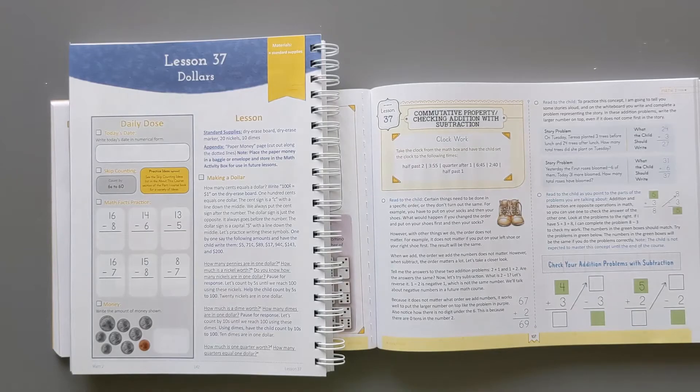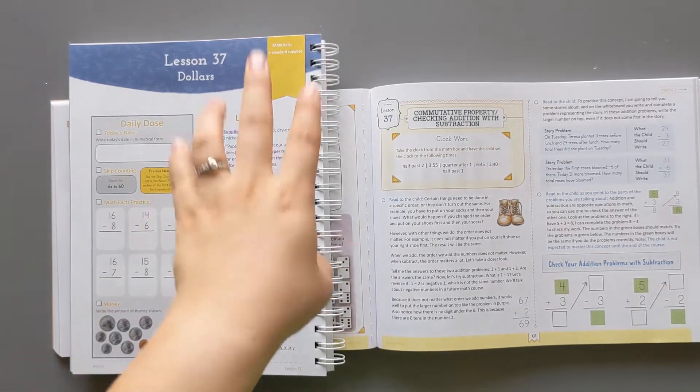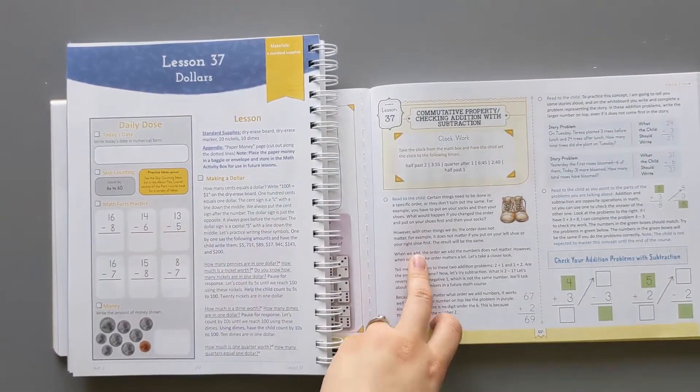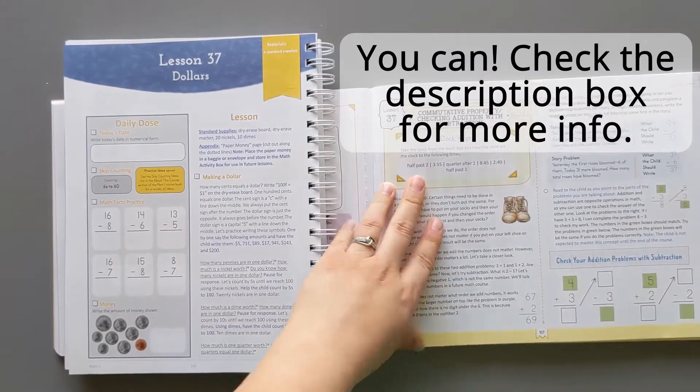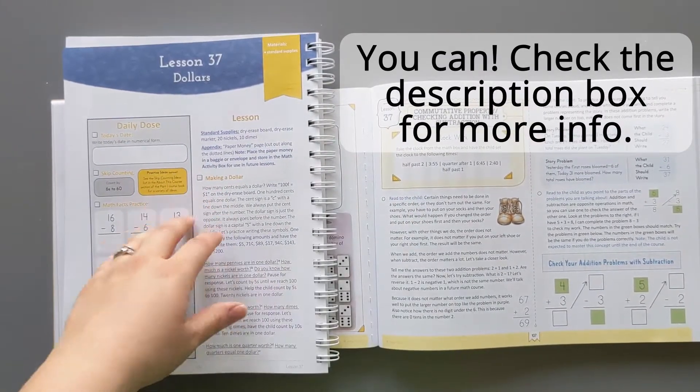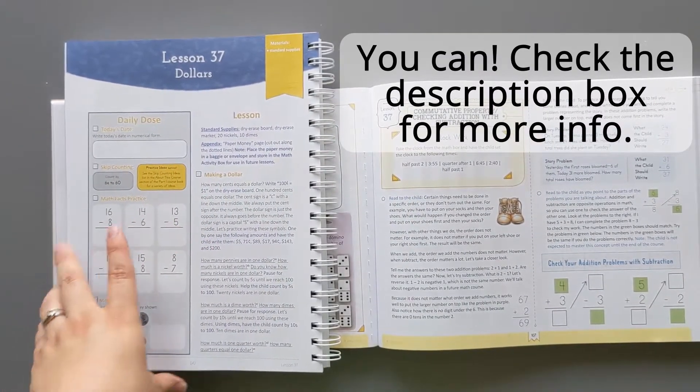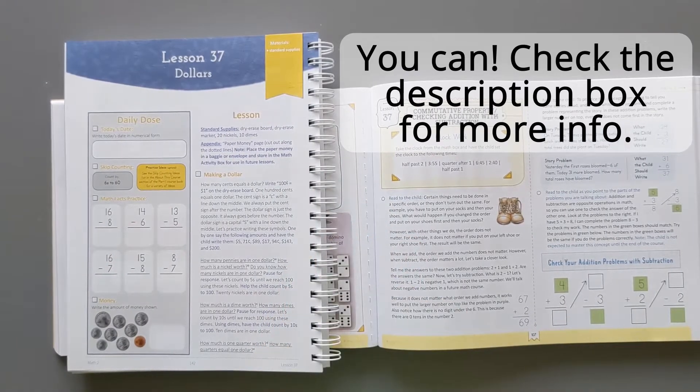And I've seen parents ask what if we're in the middle of the old version and want to switch to the new one. Can we? My kiddo who's going to use level two is currently in level one of the discontinued version. She's just going to finish that up and then jump into level two when she's done with it.